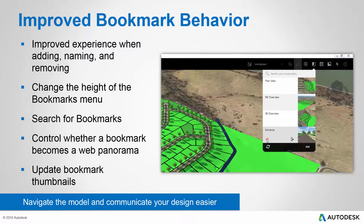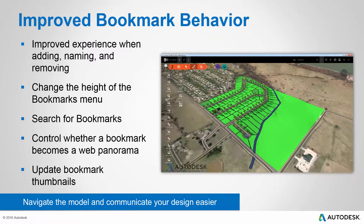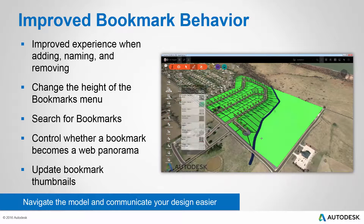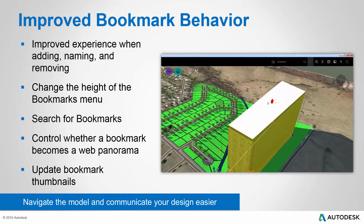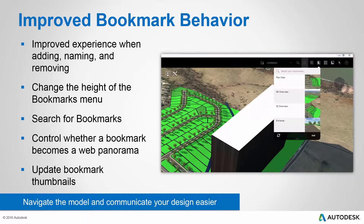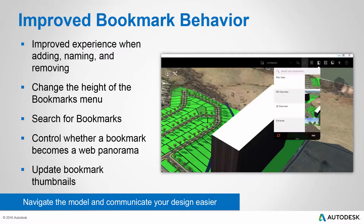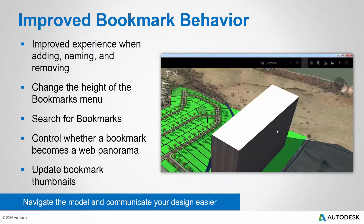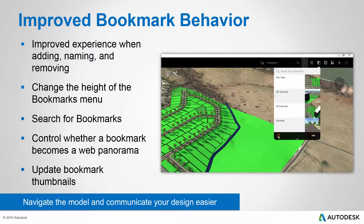A really useful feature in this latest release is the ability to update the bookmark thumbnails. As an InfraWorks 360 user, your model is always changing. In this example, we're going to add a building, and when we look at the bookmark menu, currently the building doesn't exist. So we simply refresh the bookmark thumbnails, and the building gets added. Now we have an accurate representation of the model in our thumbnails. That's how easy it is to update those bookmark thumbnails.